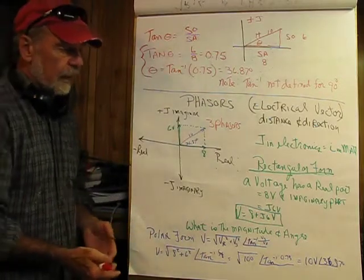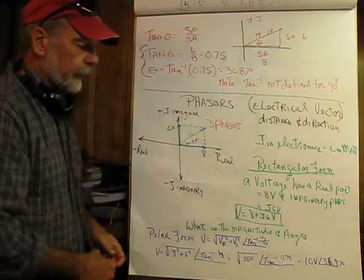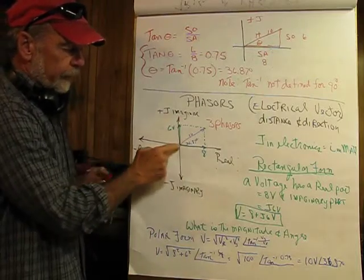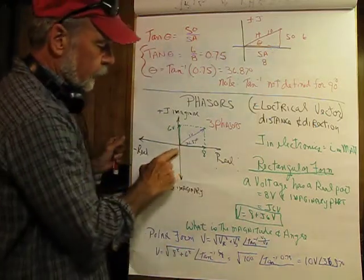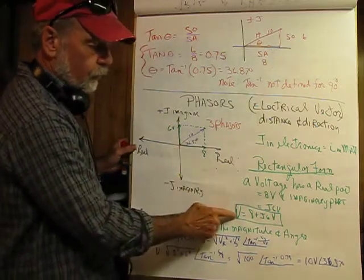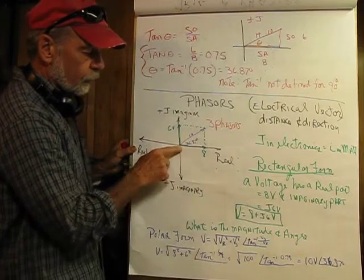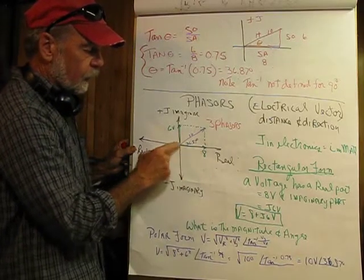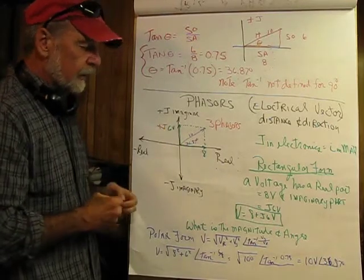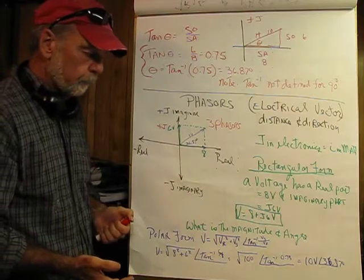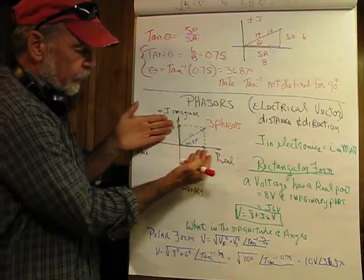Sometimes a voltage will have a real part and an imaginary part — we're dealing with an offset from some reference point. The voltage here, defined in rectangular form, is v equals 8 plus j6: 8 on the real axis, plus j6 on the imaginary axis. We can't add these together because they're unlike terms, so what is the magnitude and angle? This is the rectangular form.